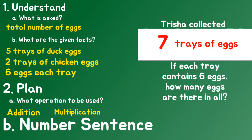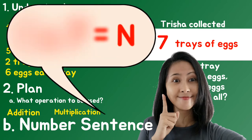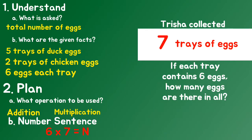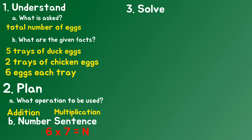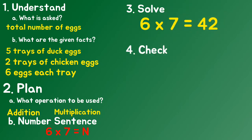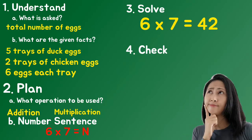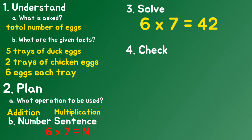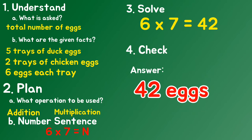So the number sentence is: 6 eggs times 7 trays of eggs. Then solve. Now check — check if your answer is correct. Finally, state the answer: 42 eggs.